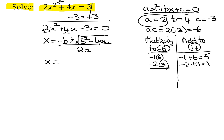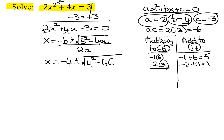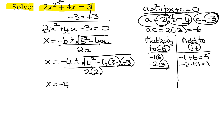We've already found out what a, b, and c are. So I've got negative b — b is 4 — plus or minus the square root. b is 4, so it's 4 squared minus 4 times a, which is 2, times c, which is negative 3. All underneath the radical, all divided by 2 times a, which was 2. So x equals negative 4 plus or minus the square root of 16 — minus 4 times 2 is 8, times negative 3 is positive 24 — all divided by 4.